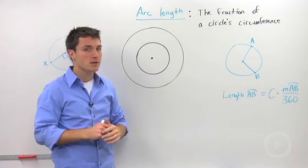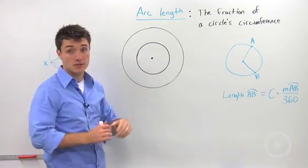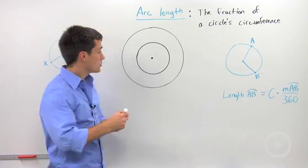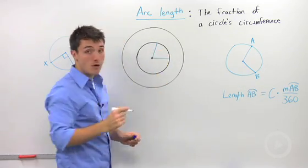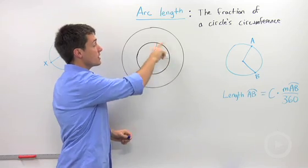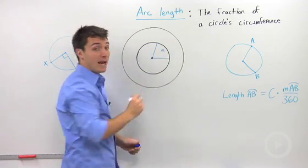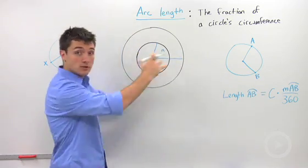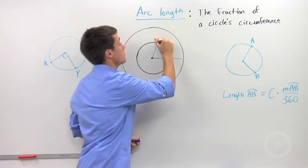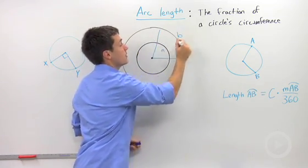To compare arc length and arc measure, let's look at some concentric circles. Let's say I drew in two radii in the smaller circle and I called that intercepted arc, arc A. Let's say I extended those radii all the way out to the larger circle, and I'm going to call that arc B.